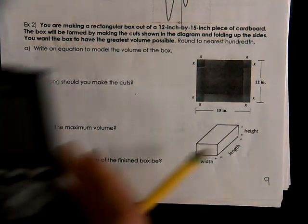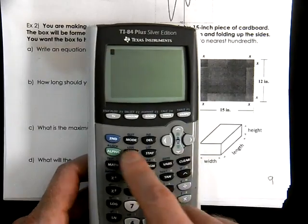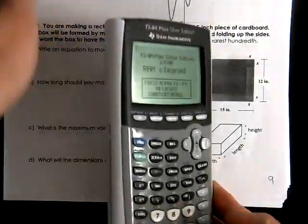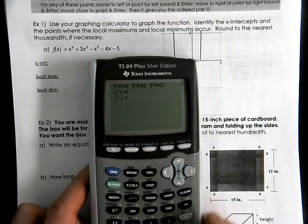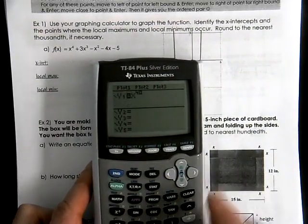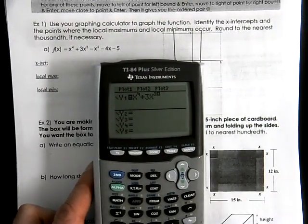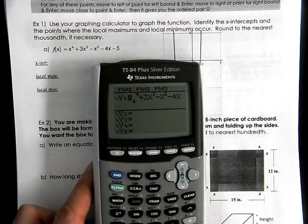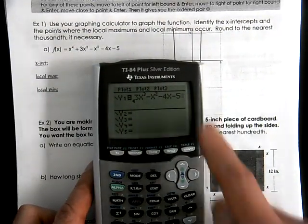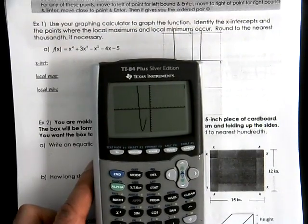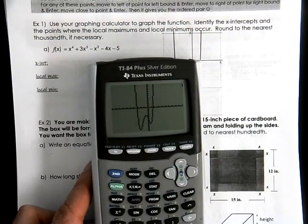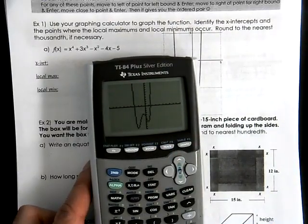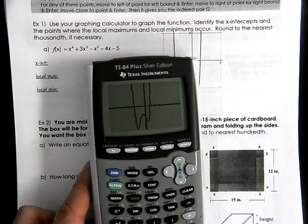If we're using a graphing calculator, you might want to say 2nd plus 712, so we don't have any additional errors happening. You would want to type in your equation x to the 4th plus 3x to the 3rd minus x squared minus 4x minus 5. And we graph that. And you see the same graph that we just had in Desmos.